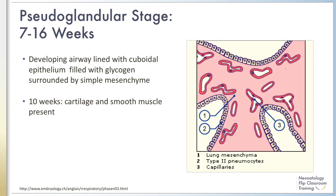The pseudoglandular stage occurs between 7 and 16 weeks gestation. In the beginning of this stage, the developing airway is lined with cuboidal cells filled with glycogen and surrounded by simple mesenchyme. By 10 weeks, cartilage and smooth muscle are present.